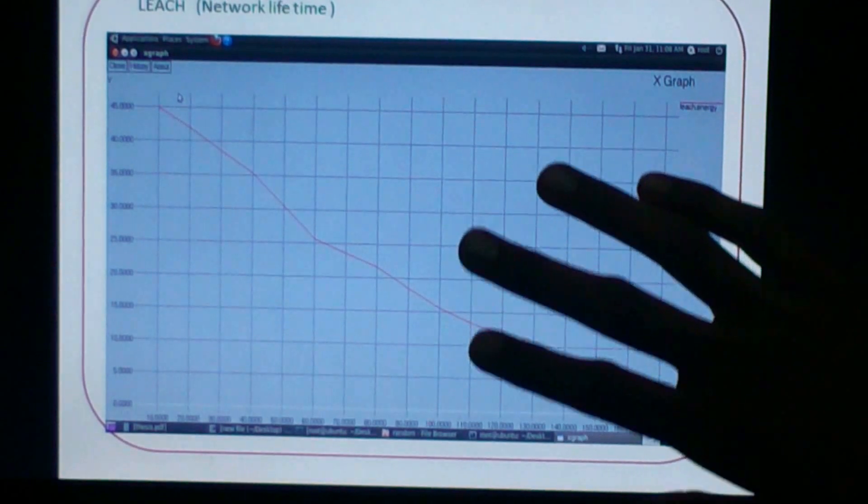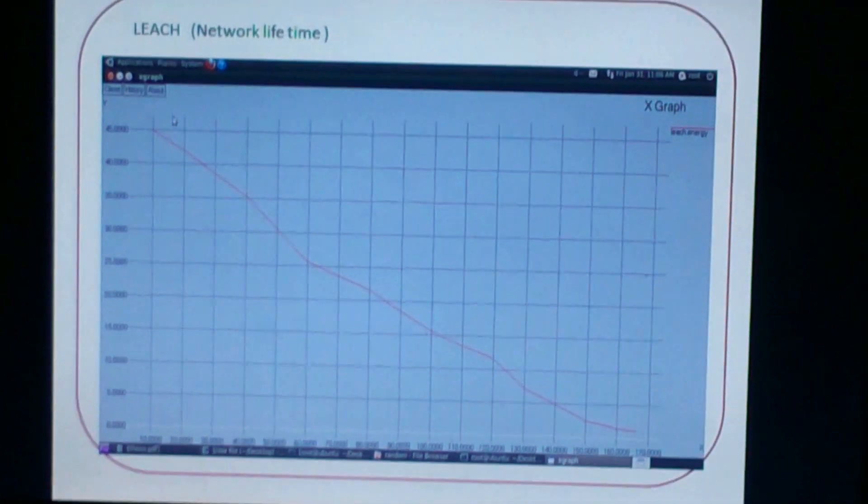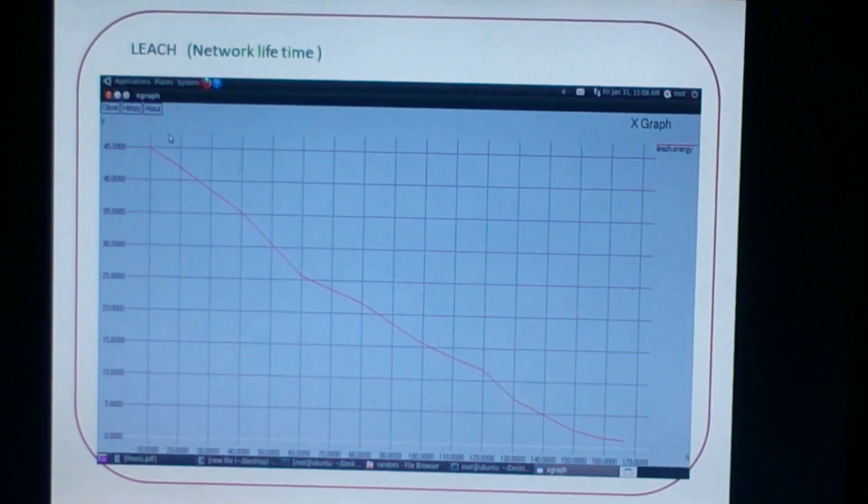This graph shows the total network lifetime. The total network lifetime is 50 Joules and it decreases with time.